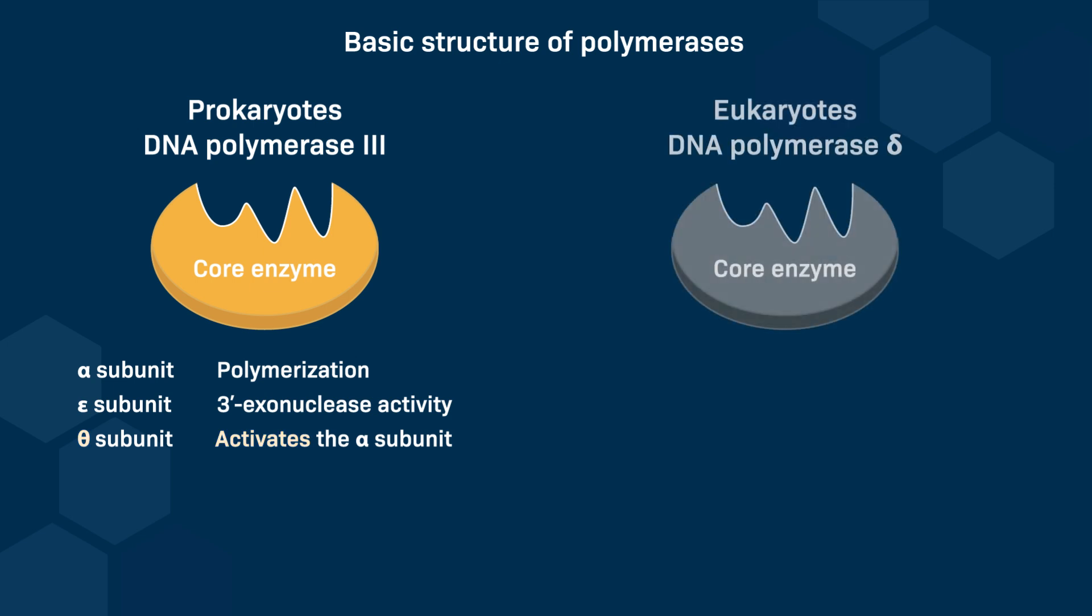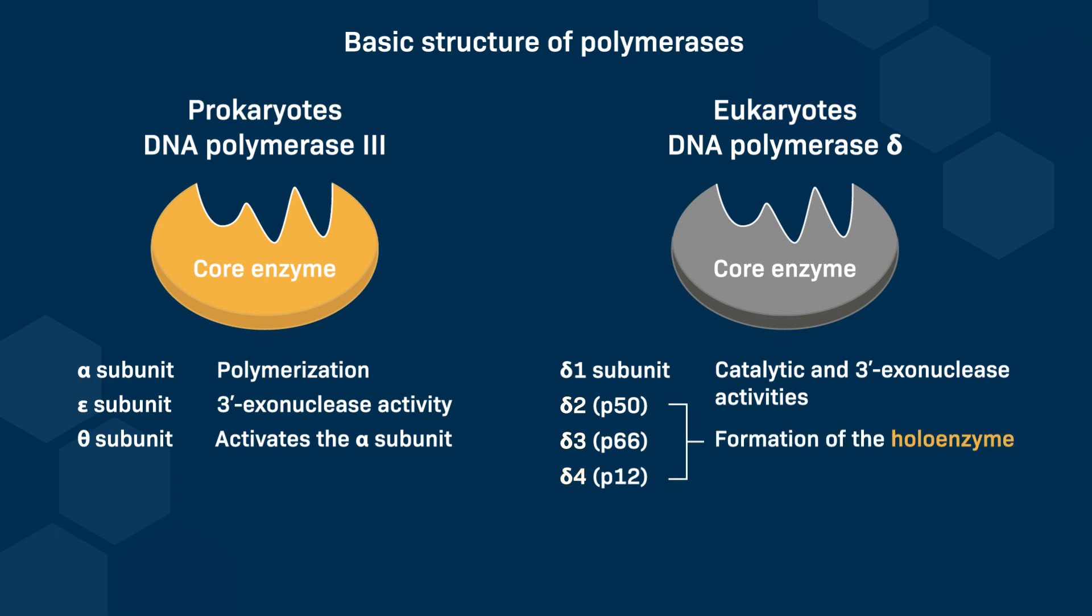In contrast, eukaryotic DNA polymerase delta contains a single subunit, P125, or pol-delta-1, which has both catalytic and 3' exonuclease activities. Additionally, it includes other subunits, such as P50, P66, and P12, which all contribute to forming the hollow enzyme.